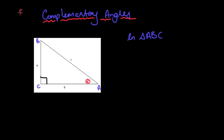Complementary angles mean they add up to give 90. So when we're talking about complementary angles within trigonometry, we're looking at these two angles. I'm going to write the other angle as 90 minus theta. So if that's 30, that's 90 minus 30; if it's 70, that's 90 minus 70, and so on. These are complementary because they add up to give 90 degrees, and there are some nice relationships that work out in trigonometry.